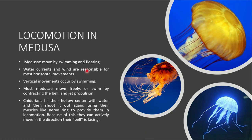Now let's talk about medusa's locomotion. Medusa is another morphological form of the Cnidarians. Medusa moves by swimming and floating. For horizontal movement, water currents and winds are responsible, while vertical movement is through swimming. Medusa moves freely through contraction and jet propulsion — the bell contracts and jets water to propel it forward.